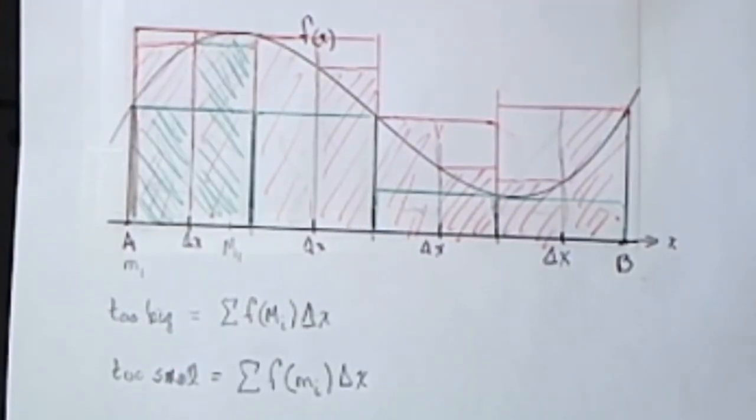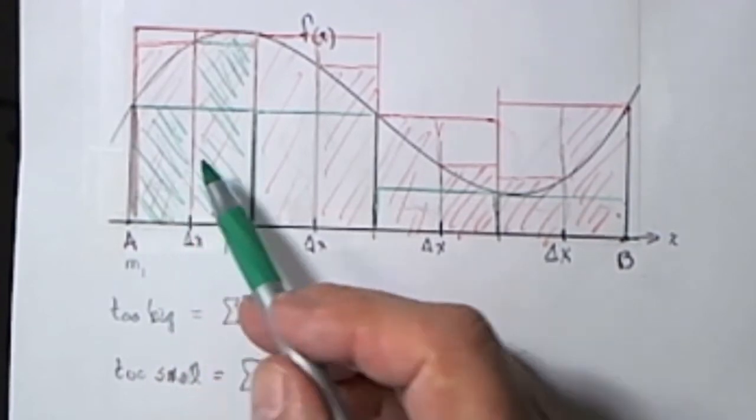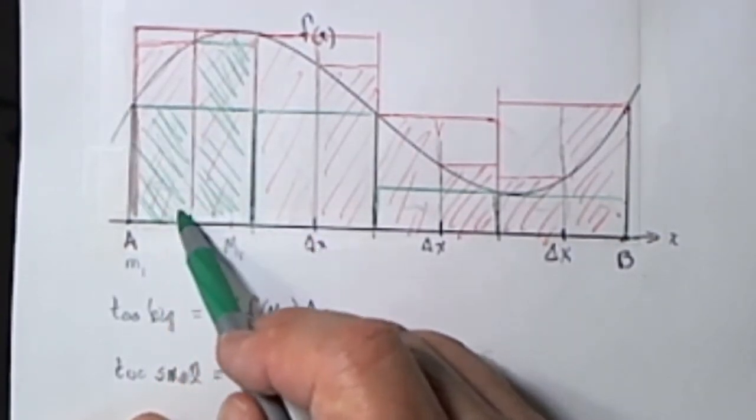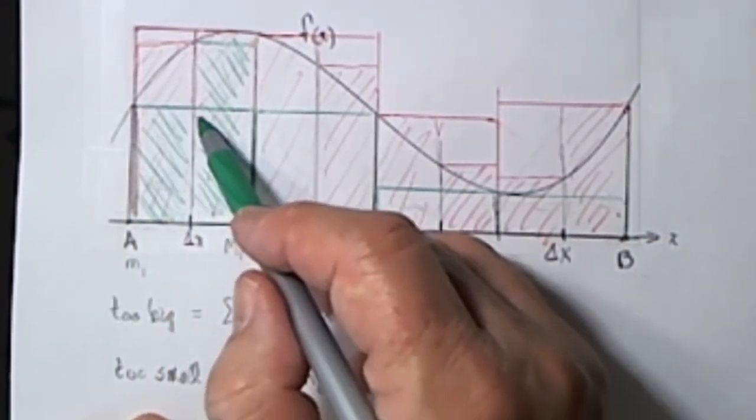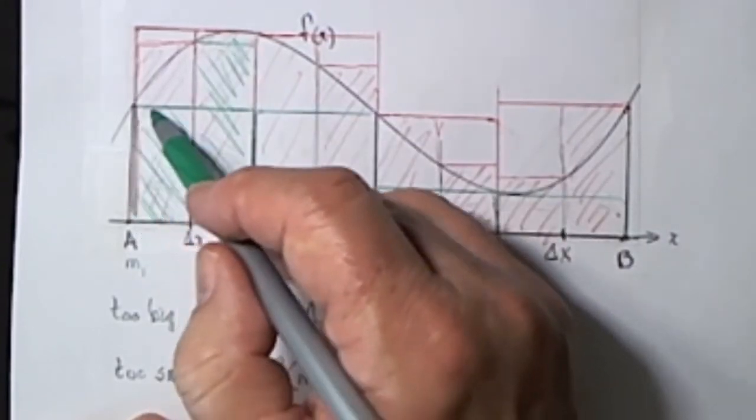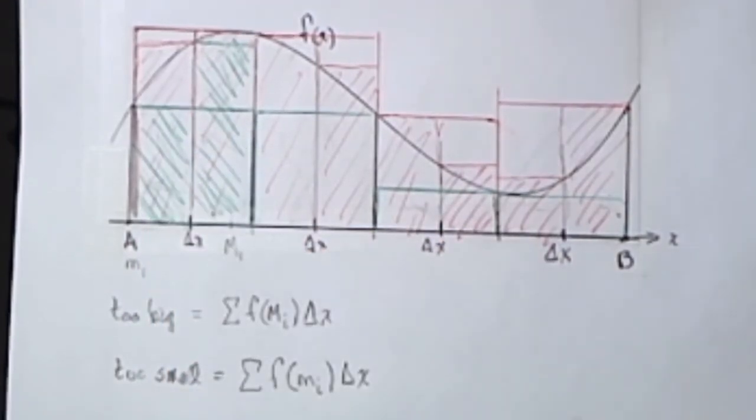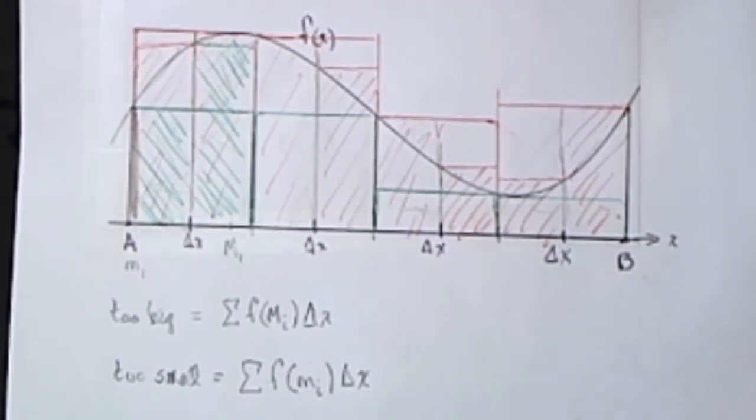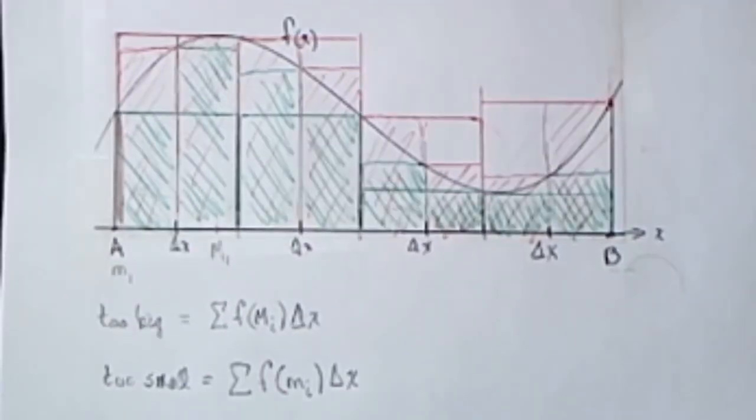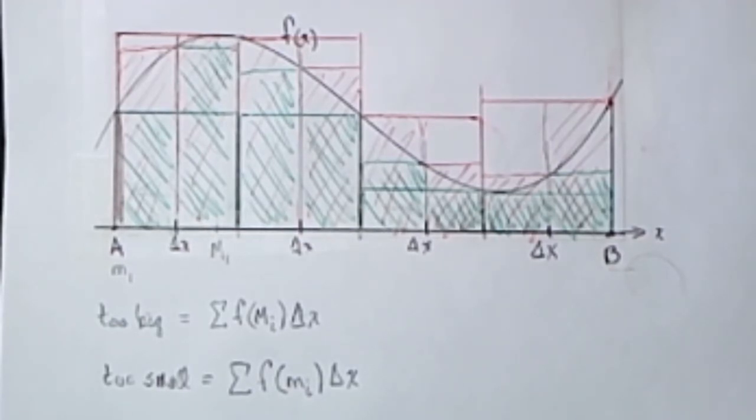But look what happens when we examine the green, the too small. This one was this piece, but now this piece. See, the sum of this rectangle and this rectangle is going to be more than the single rectangle that we had before. The smaller rectangle begins to get larger. The too-small estimate begins to get larger. So as we continue to subdivide, the too-small estimate keeps getting larger, the too-big estimate keeps getting smaller, and the right answer is stuck somewhere in between.